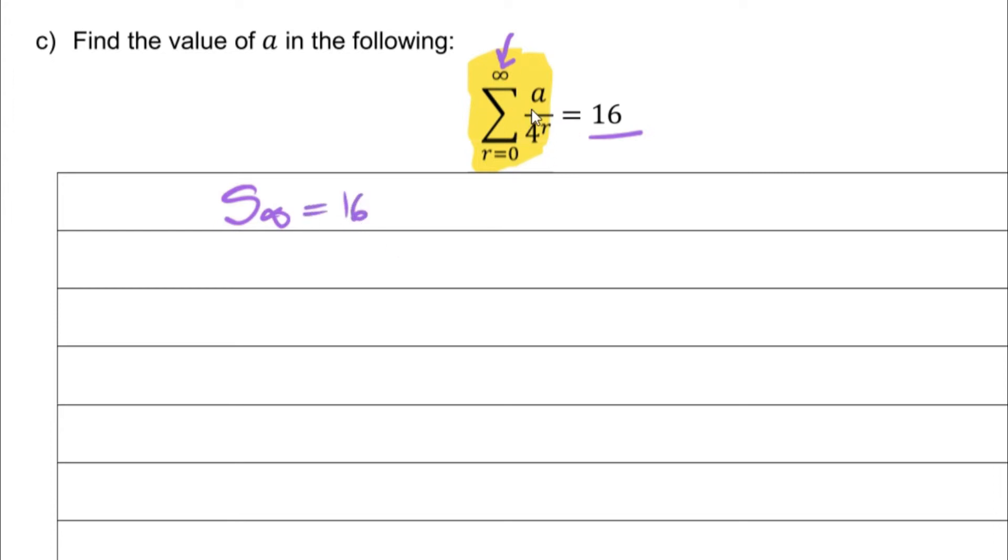The formula to get sum to infinity is a over 1 minus r. We need to figure out what a is and what r is so that we can get our values for sum to infinity.